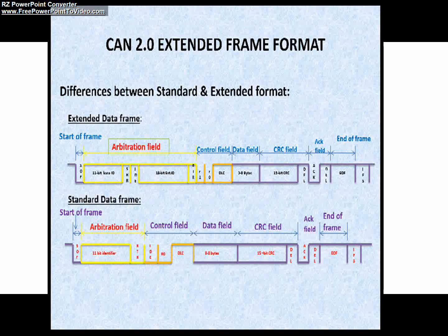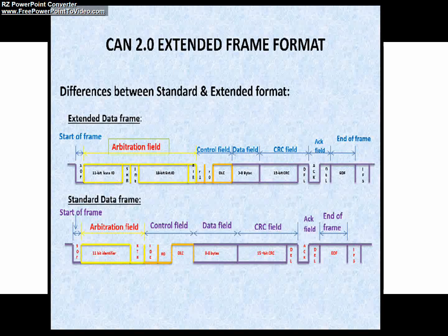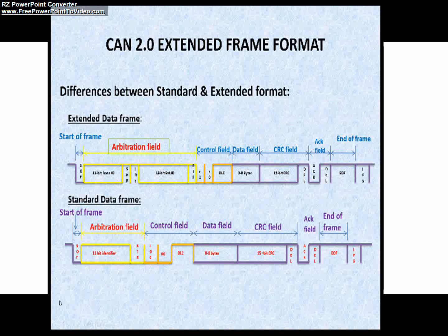Now we will see the purpose of the RTR bit, abbreviated as remote transmission request. As we already discussed in standard CAN format, the RTR bit in a data frame has to be dominant and in a remote frame it has to be recessive. You can see this in the picture.